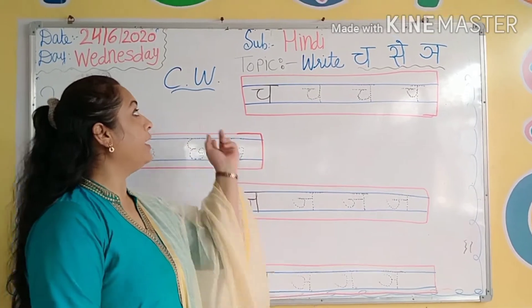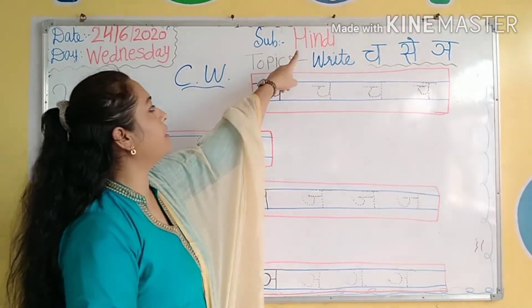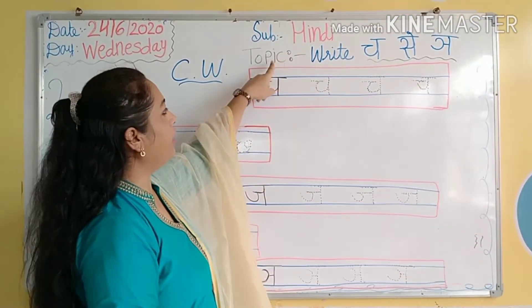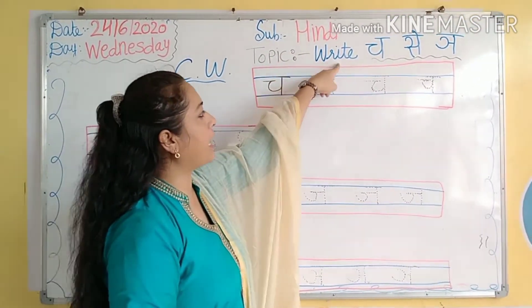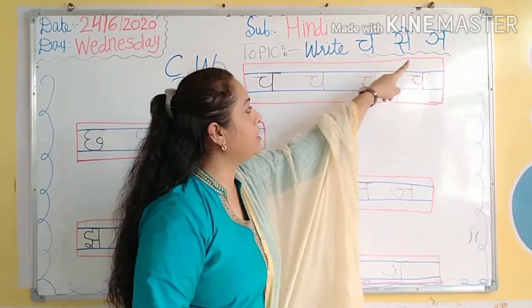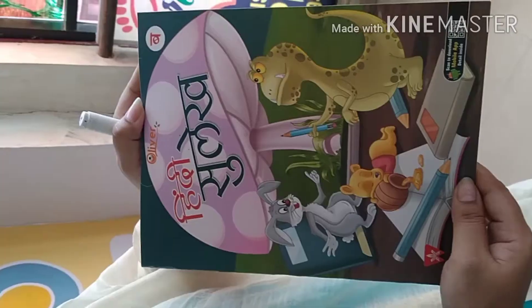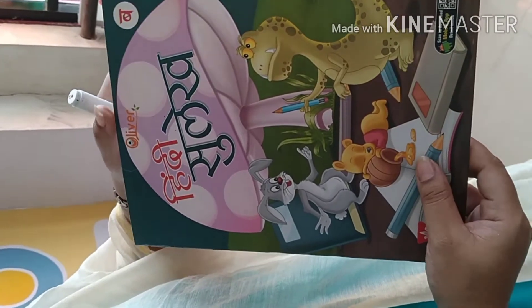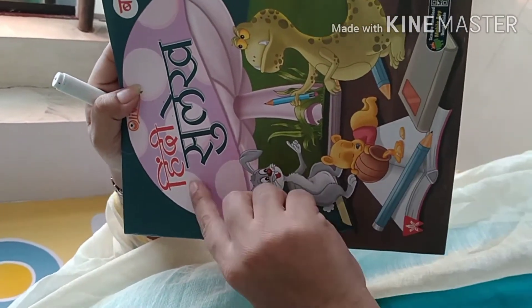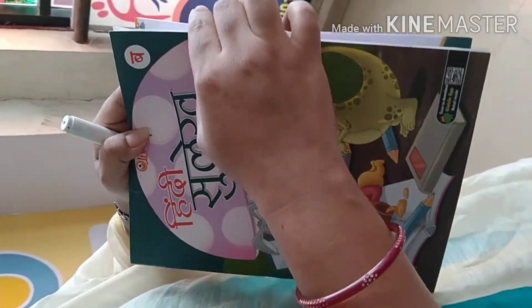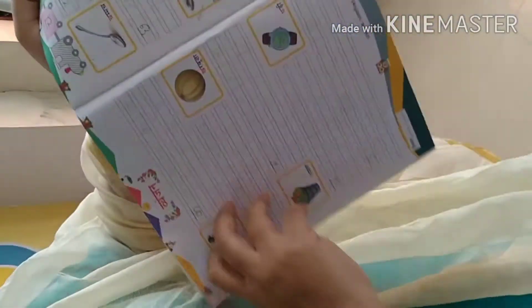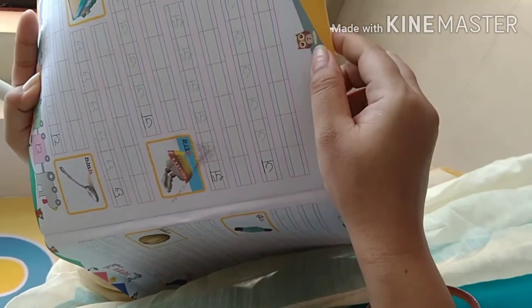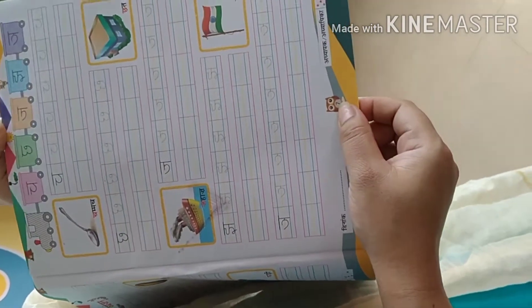Now kids, our next subject is Hindi. And the topic is writing Chh (छ). So kids, take your Hindi Sulek book and open page number 7.